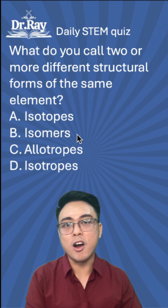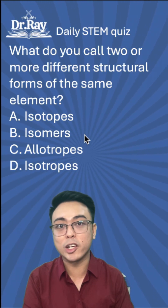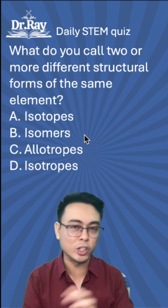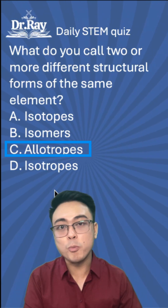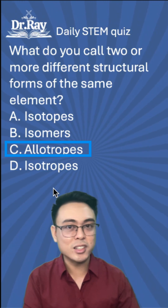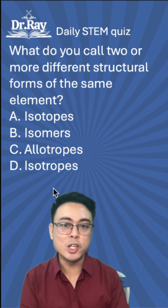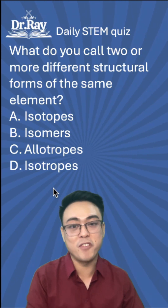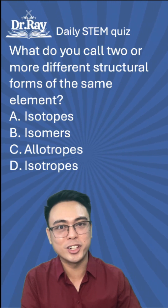Isomers are substances of the same molecular formula, but they have different molecular configurations or different arrangement of atoms. And isotropy is a property of a material that means whatever direction you measure a property, you would get the same value. I hope you got this right. Follow for more.